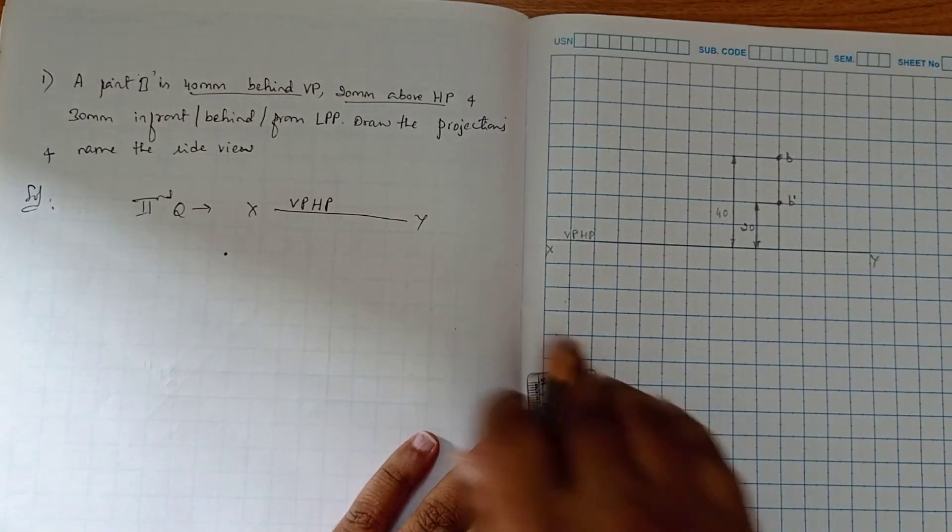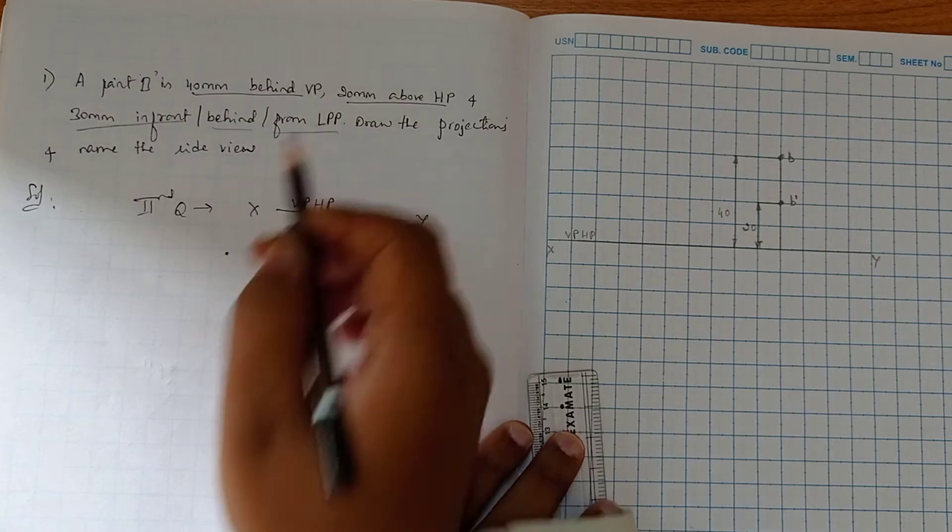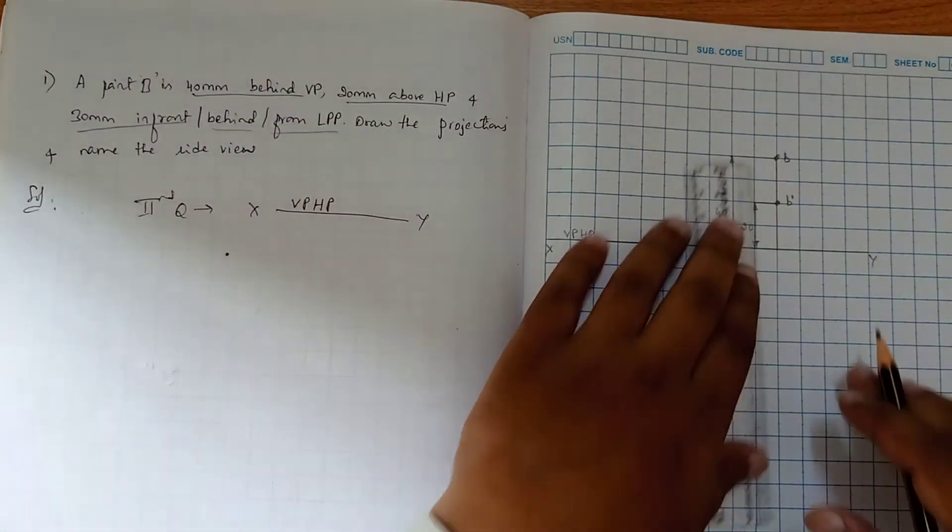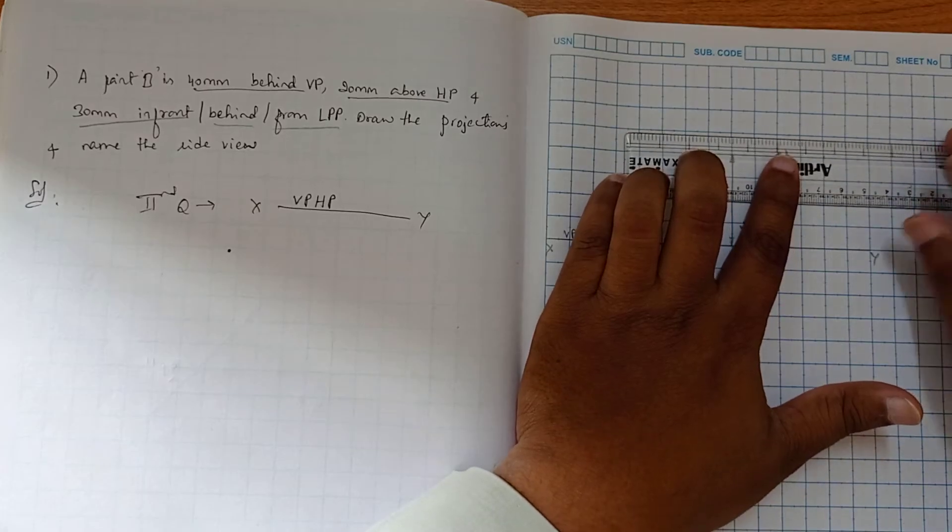Now we have to do the side view. You can see this: 30mm from LPP. So that means from this projection we have to consider three boxes here, okay, three boxes here.